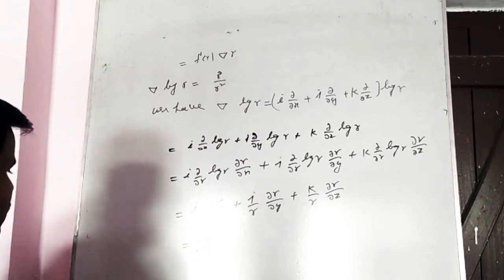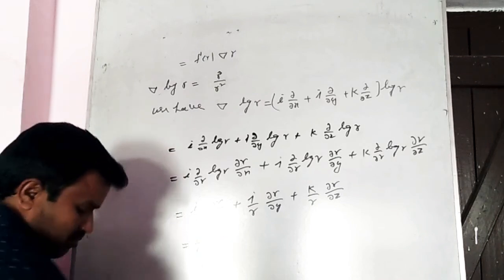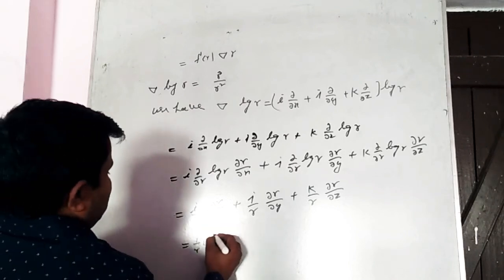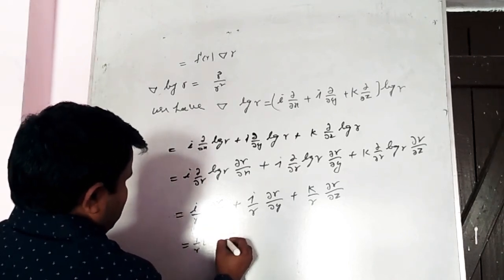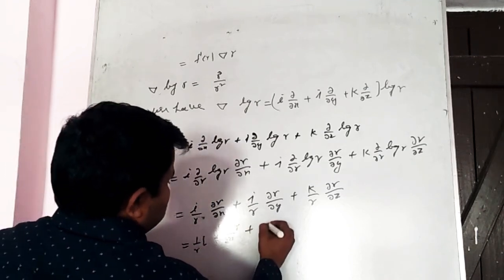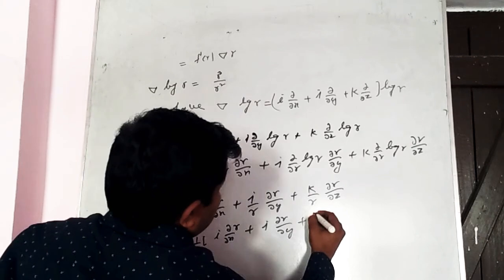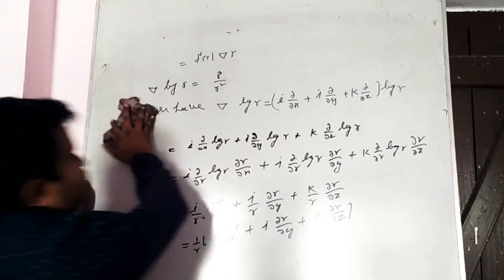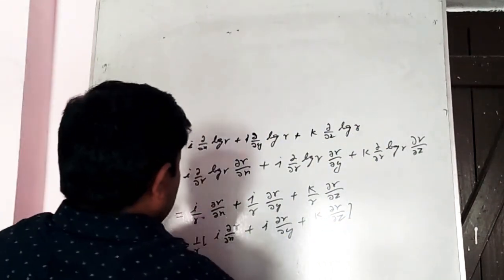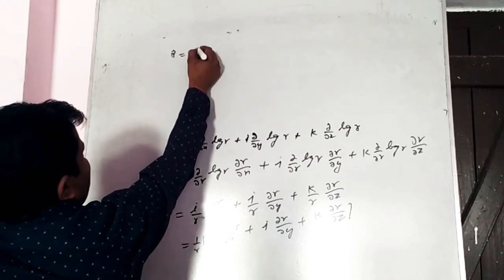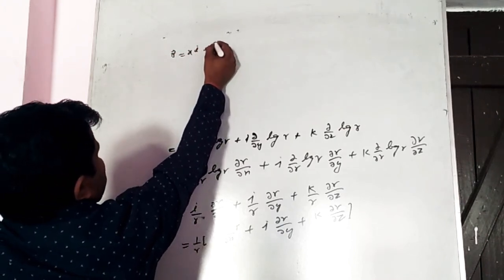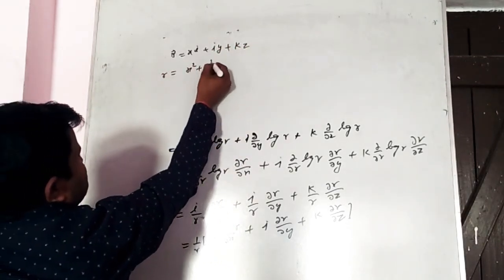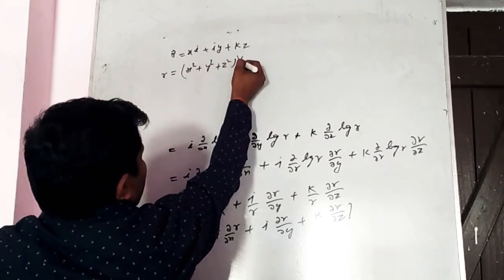1/r common: (1/r)[i ∂r/∂x + j ∂r/∂y + k ∂r/∂z]. Now r = (x² + y² + z²)^(1/2). Differentiating: ∂r/∂x = (1/2)(x² + y² + z²)^(−1/2)·2x = x/r. The position vector r⃗ = ix + jy + kz.